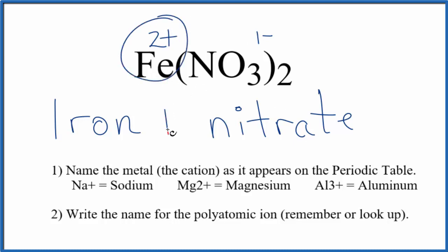Because it has this 2 plus, we write a Roman numeral 2 here in parentheses between the iron and the nitrate. So the name for Fe(NO3)2 is iron 2 nitrate.